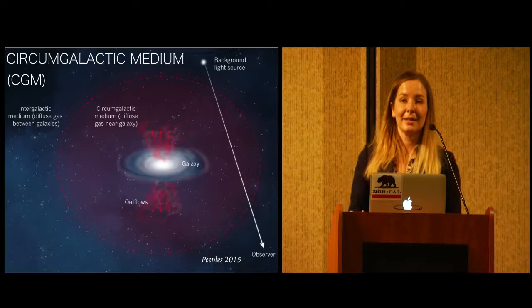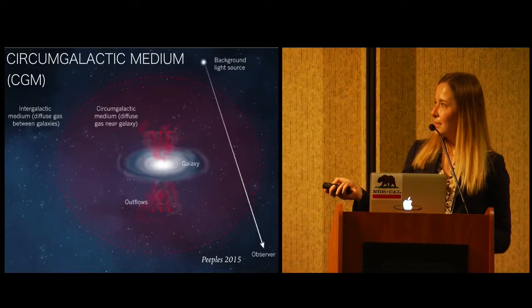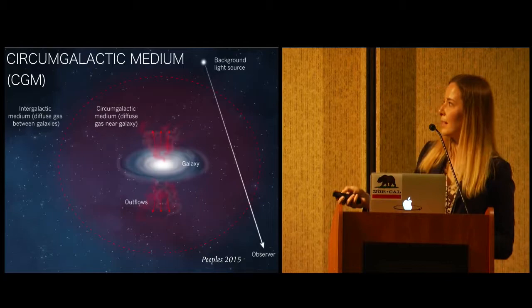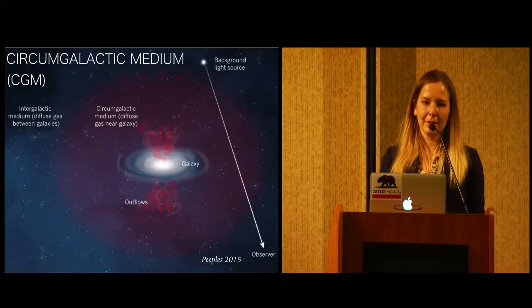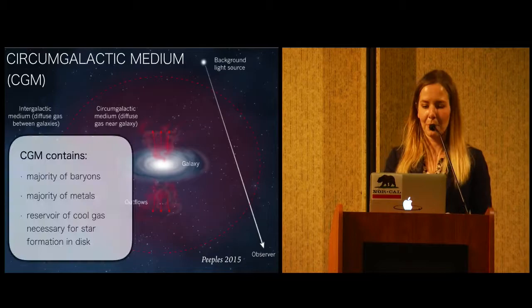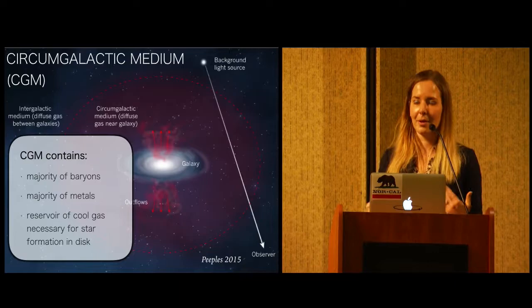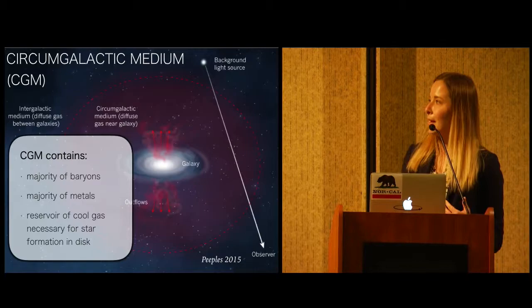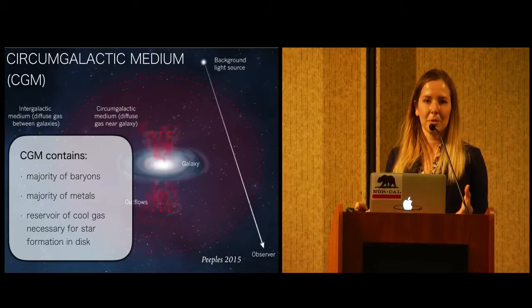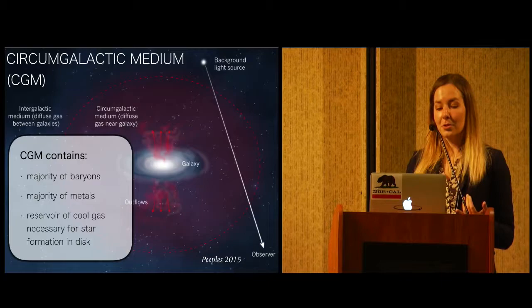And we really care about galactic outflows because they enrich the circumgalactic medium, which is the diffuse multiphase gas that's outside of the main disk of a galaxy but within its dark matter halo. And then anything outside of it is the intergalactic medium, or the IGM. And the circumgalactic medium is actually really cool because it holds most of the baryons in the universe. If you do standard lambda-CDM cosmology, you can predict the number of baryons you'd expect to see based on the mass of dark matter we have. And galaxies do not have anywhere near the number of baryons we expect to see because they are out in the circumgalactic medium.